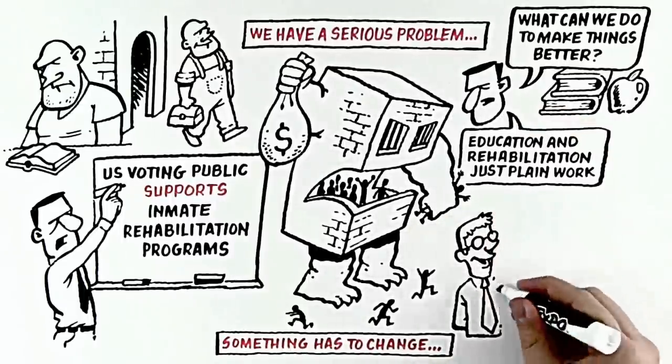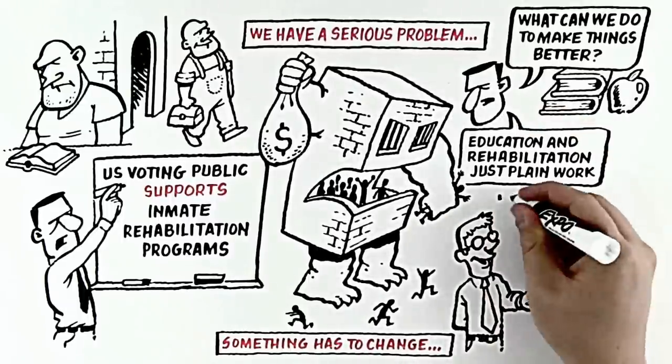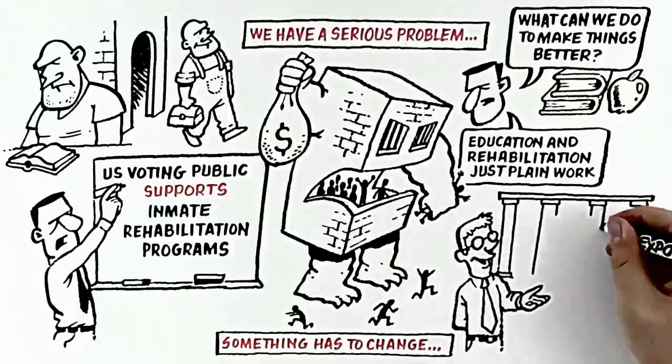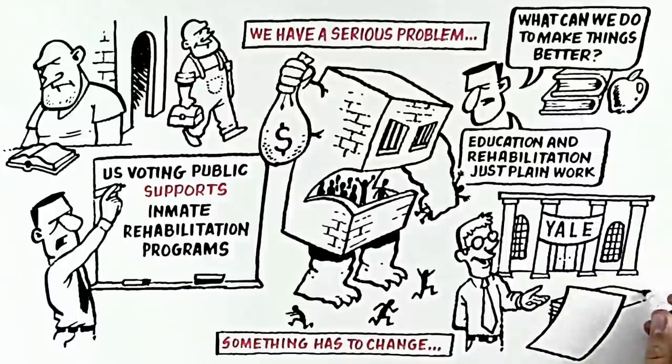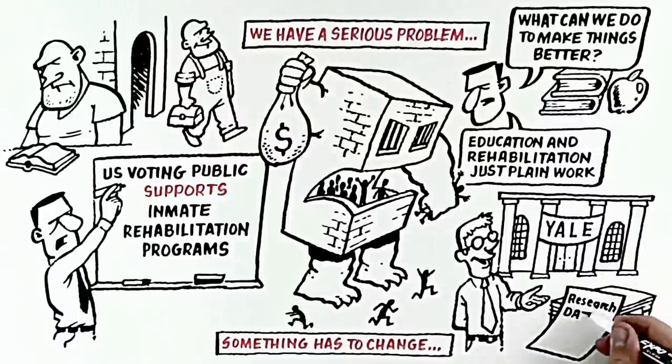Studies show that earning a high school diploma while in prison cuts recidivism by 33%. Job training and job placement cut recidivism by nearly 60%. Drug, alcohol, and anger management programs change and sometimes save lives.